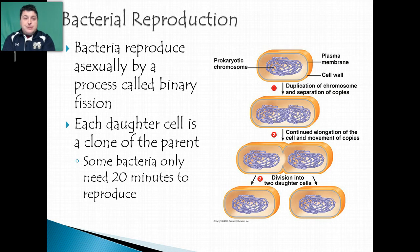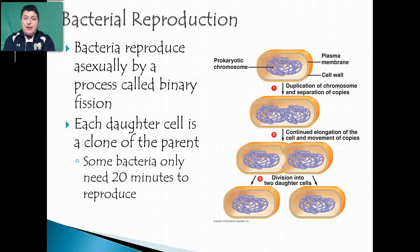When bacteria reproduce it's a little different than eukaryotes. Because they don't have a nucleus, they don't need to undergo mitosis. Instead, bacteria reproduce through a process called binary fission — the chromosomes duplicate and separate, the bacteria elongates, and then it divides to create two identical daughter cells, basically clones of themselves.